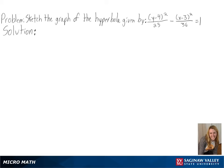Our problem is to sketch the graph of the hyperbola given by y minus 4 squared over 25 minus x minus 3 squared over 36 equals 1. Our equation is already in standard form so we can start plotting our graph.